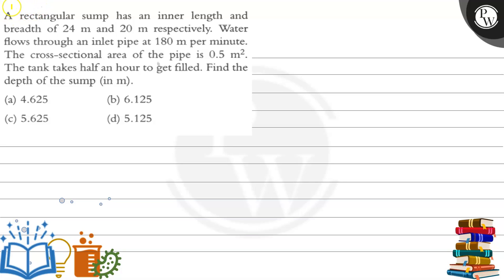Hello Bacho. Let's see the question. The question says that a rectangular sump has an inner length and breadth of 24 meter and 20 meter respectively. Water flows through an inlet pipe at 180 meter per minute. The cross sectional area of the pipe is 0.5 meter square. The tank takes half an hour to get filled. Find the depth of the sump in meter.